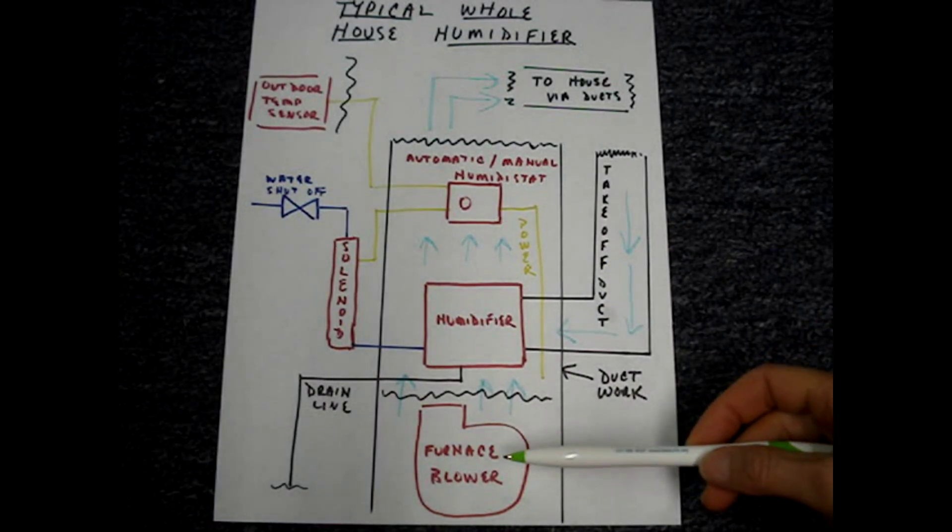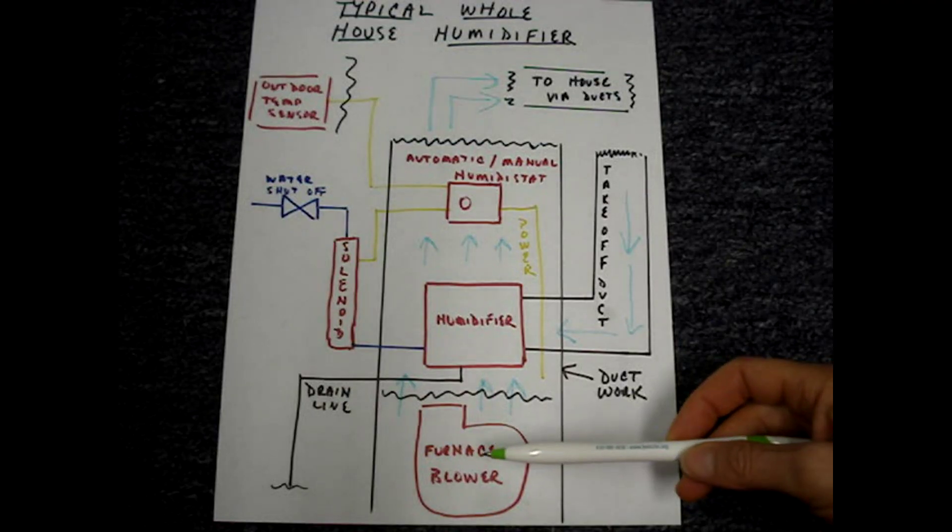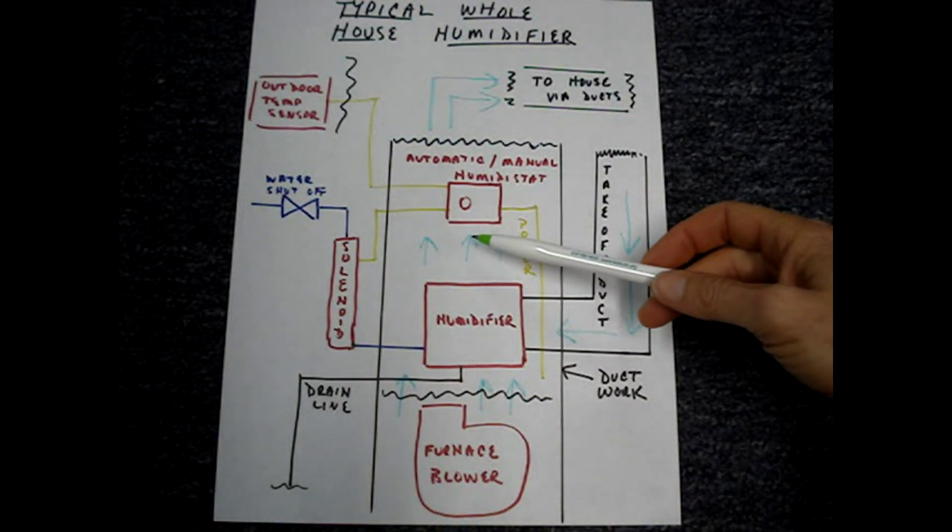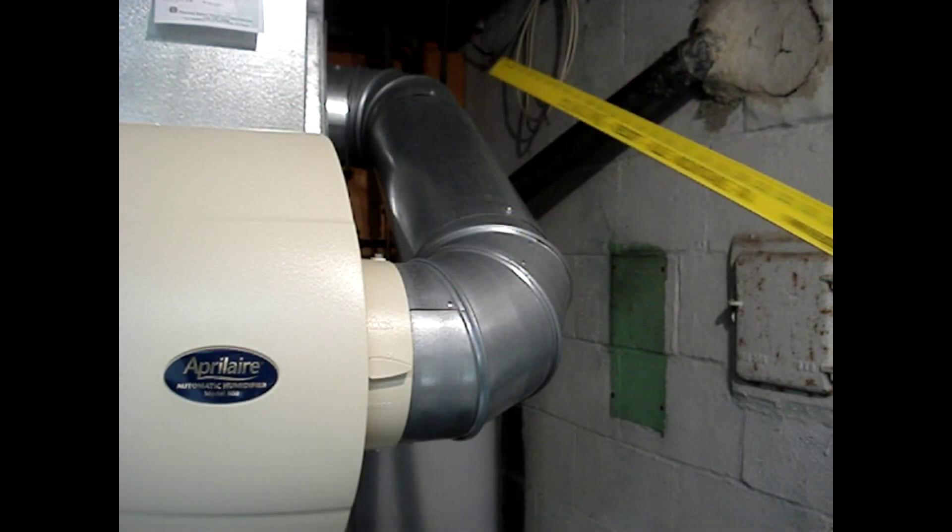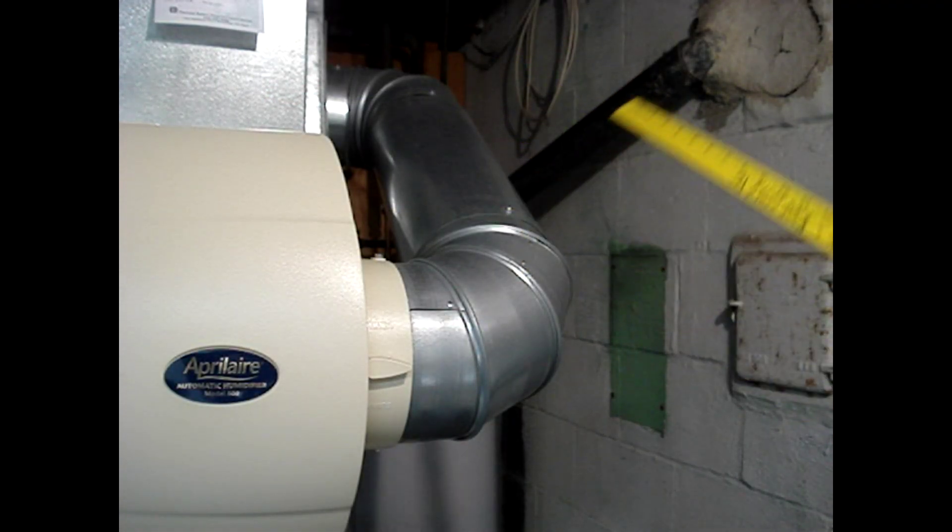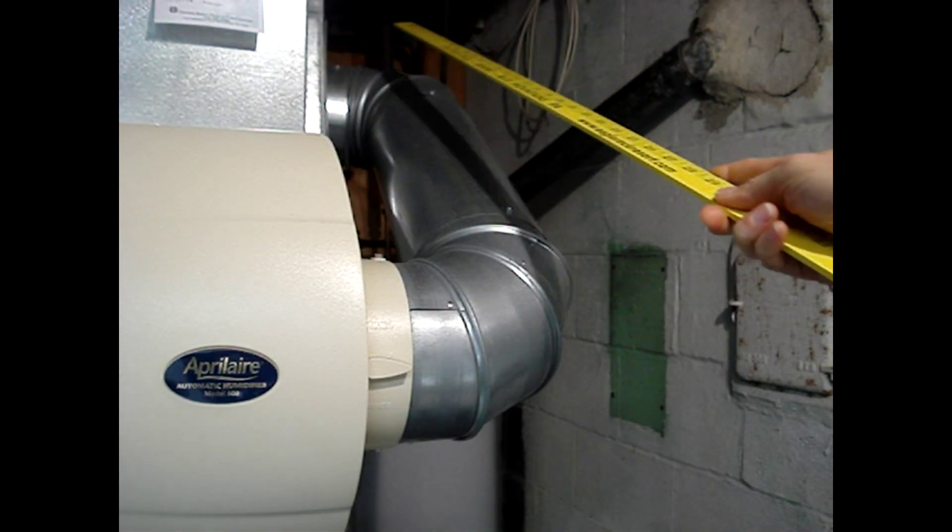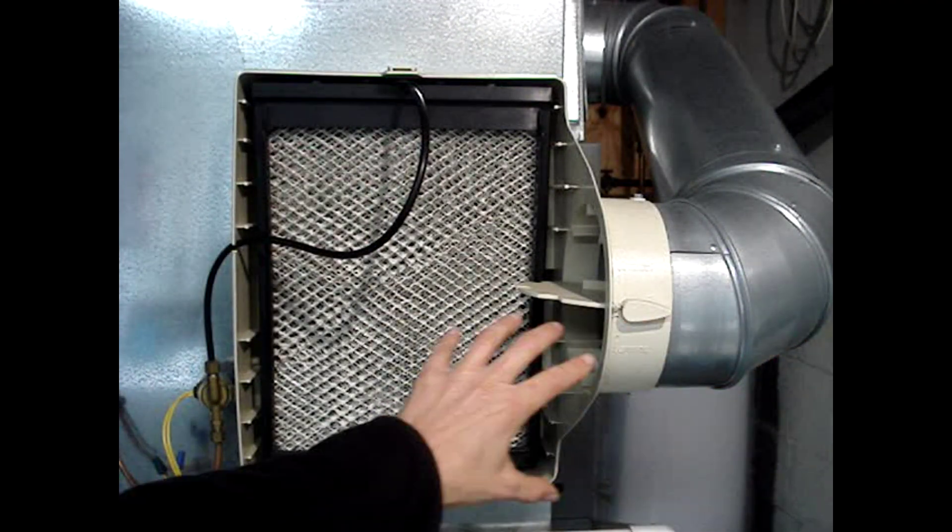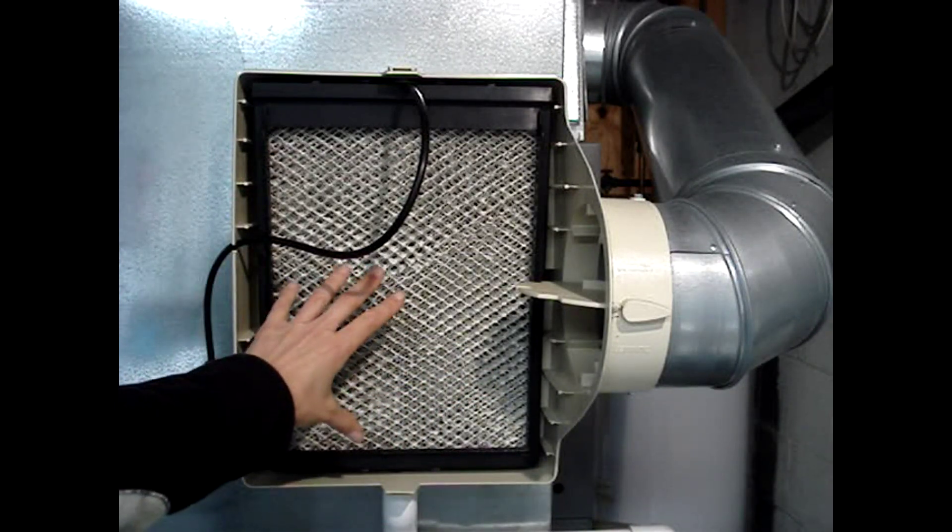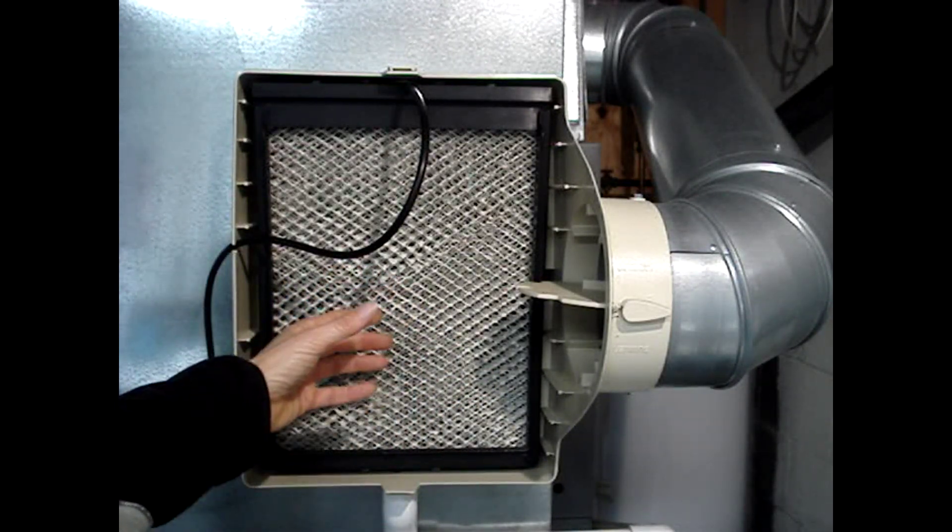This bypass humidifier has a take-off duct that's connected to the supply side. The supply side air pushes through the pad, it evaporates the water, and the moist air is pushed throughout the system by the furnace's fan.